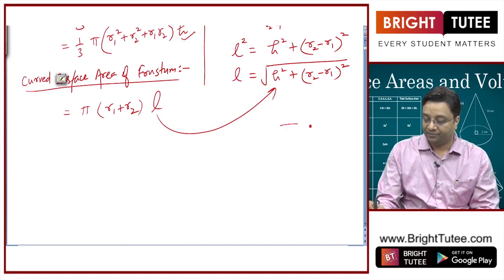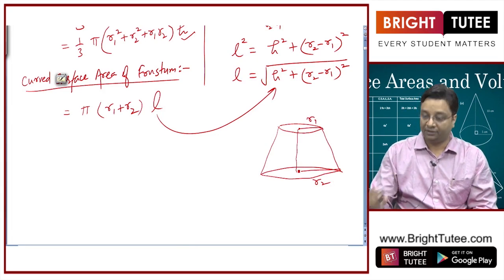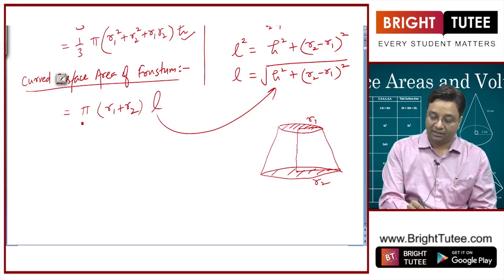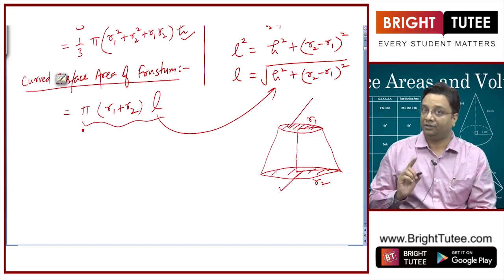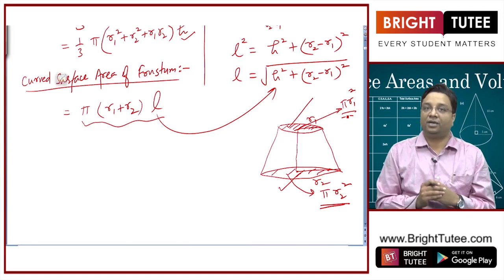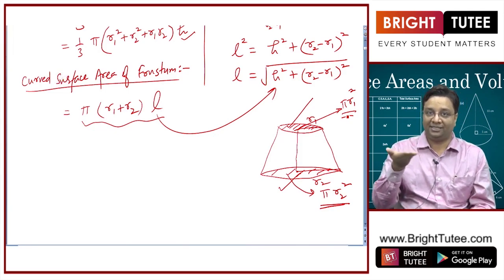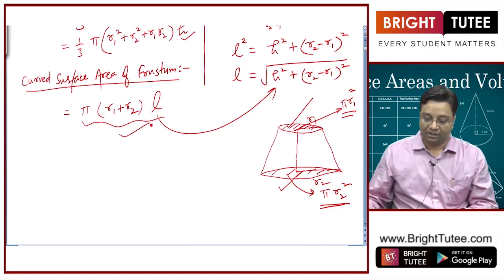Now, if the top and bottom surfaces are also closed and you need the total surface area, you add the areas of those circular faces to the curved surface area. The top face has area πr1² and the bottom face has area πr2². You add these as per the demand of the question. For example, a tumbler has a closed base but an open top, so you add only the base area πr2² to the curved surface area.